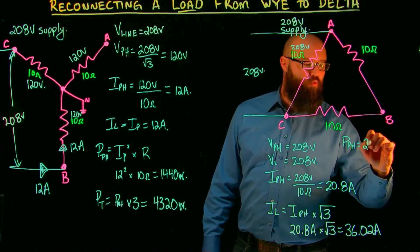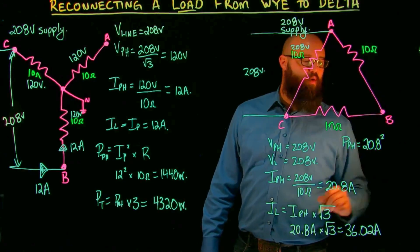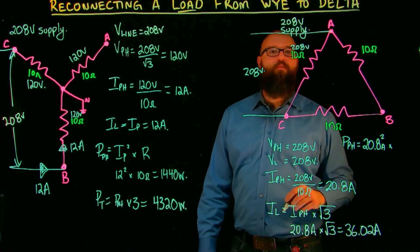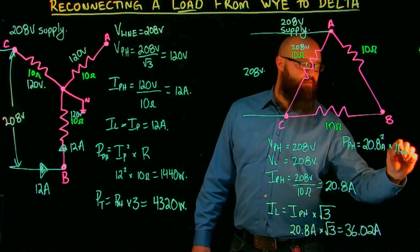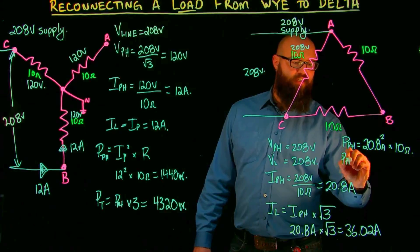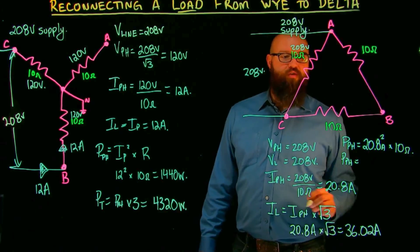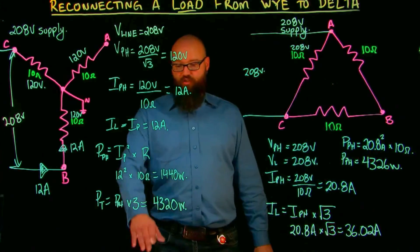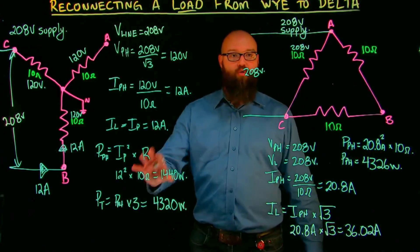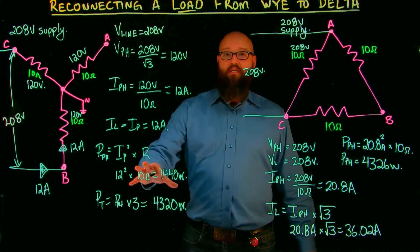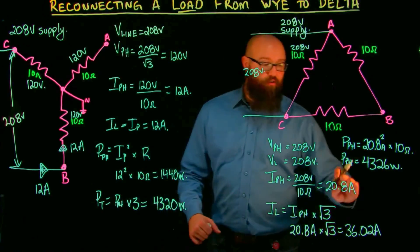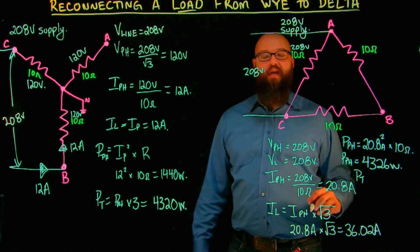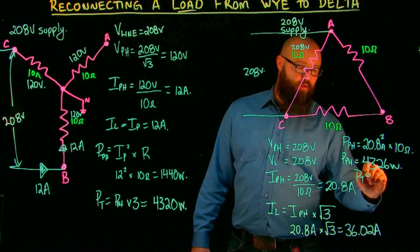Power of the phase is now equal to 4326 watts, or essentially equivalent to what we had for our total power dissipated when we were connected in Y. Now remember, this is just per phase. And if we wanted to find power total, again in a balanced load, I can take that and multiply it by three. So we go 4326 watts.